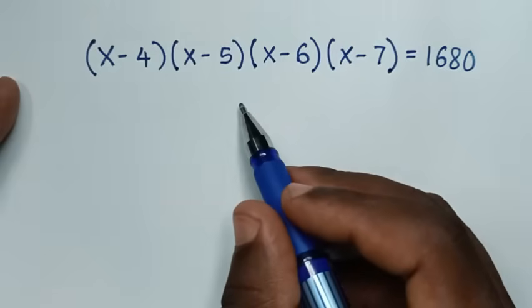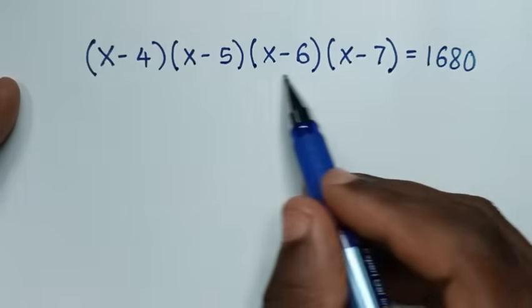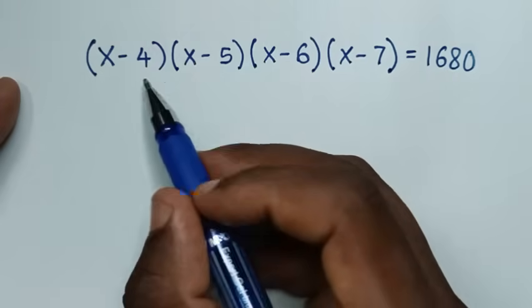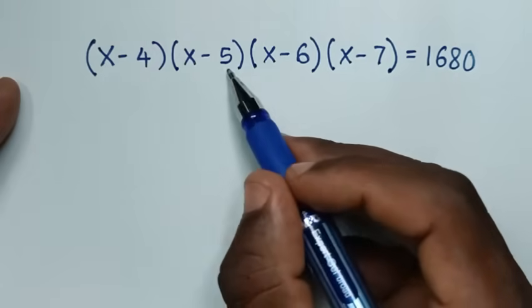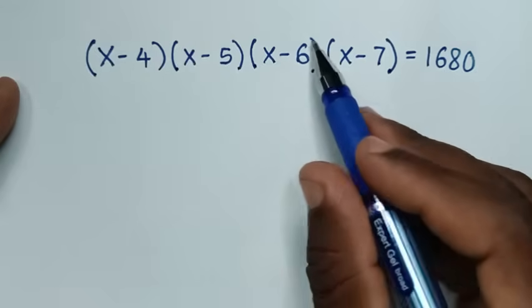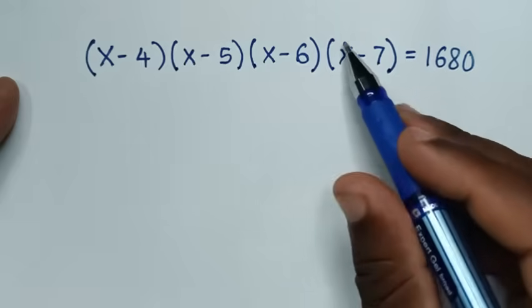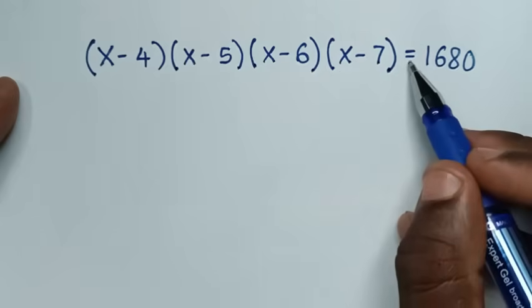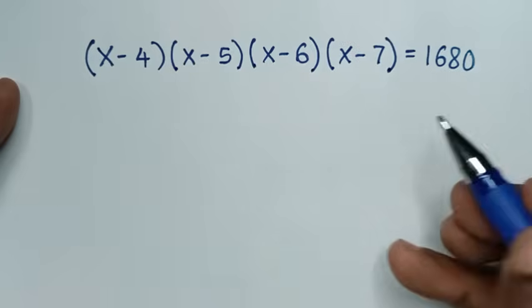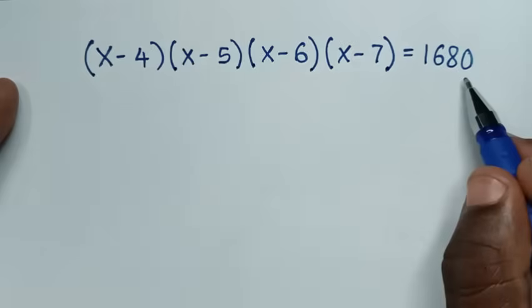Hello, you are welcome to solve this math problem which is (x minus 4)(x minus 5)(x minus 6)(x minus 7) equals 1680. We need to find the values of x from this equation.